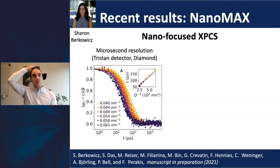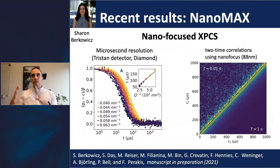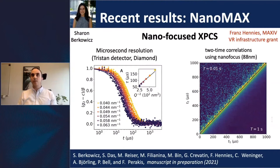She has a poster at the user meeting, and we are now trying to use the two-time correlation functions to get information from this. This demonstrates that you can use nanobeams to enhance sensitivity to fluctuations. I have also been actively interacting with colleagues coordinating a VR infrastructure grant for purchasing a microsecond-resolution detector for XPCS at MAX4. All of these things are connected to this expression of interest.